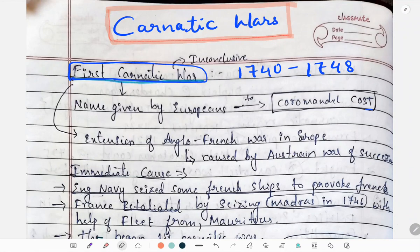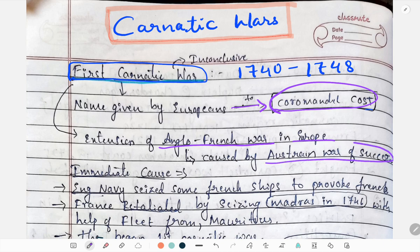Hello everyone. Today we will study about the Carnatic Wars. The First Carnatic War happened between 1740 and 1748. This name was given by the Europeans to the Coromandel Coast. This First Carnatic War was an extension of the Anglo-French War in Europe, caused by the Austrian War of Succession.